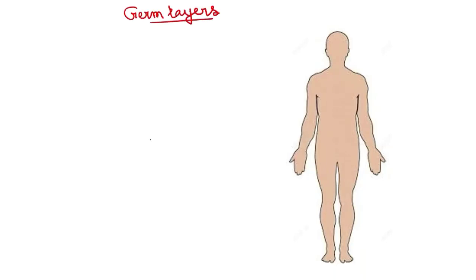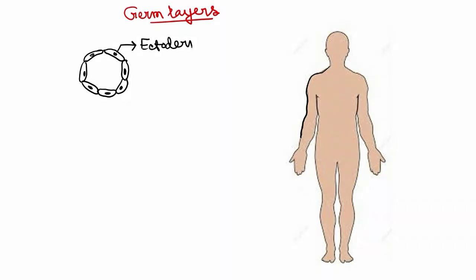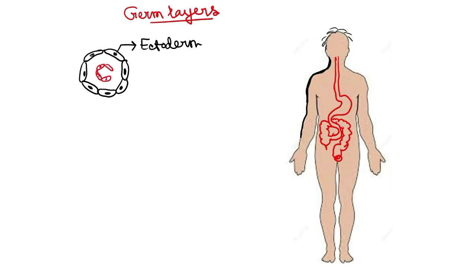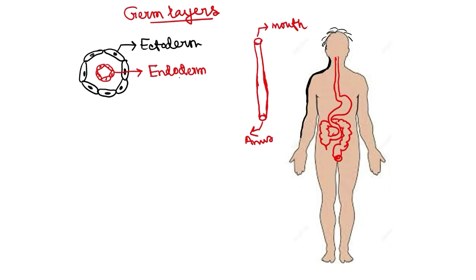This is part 3 of the phylums of animal kingdom series. In this video we will talk about germ layers. A germ layer is a group of cells in the embryo which will give rise to a particular layer in the adult body. Here I have drawn a group of cells called ectoderm — this ectodermal layer gives rise to the outer layer of the adult animal, such as skin and hair in humans. The most inner layer, the digestive system wall, is made up of different cells called endoderm, which forms the digestive tube and organs associated with the digestive system.